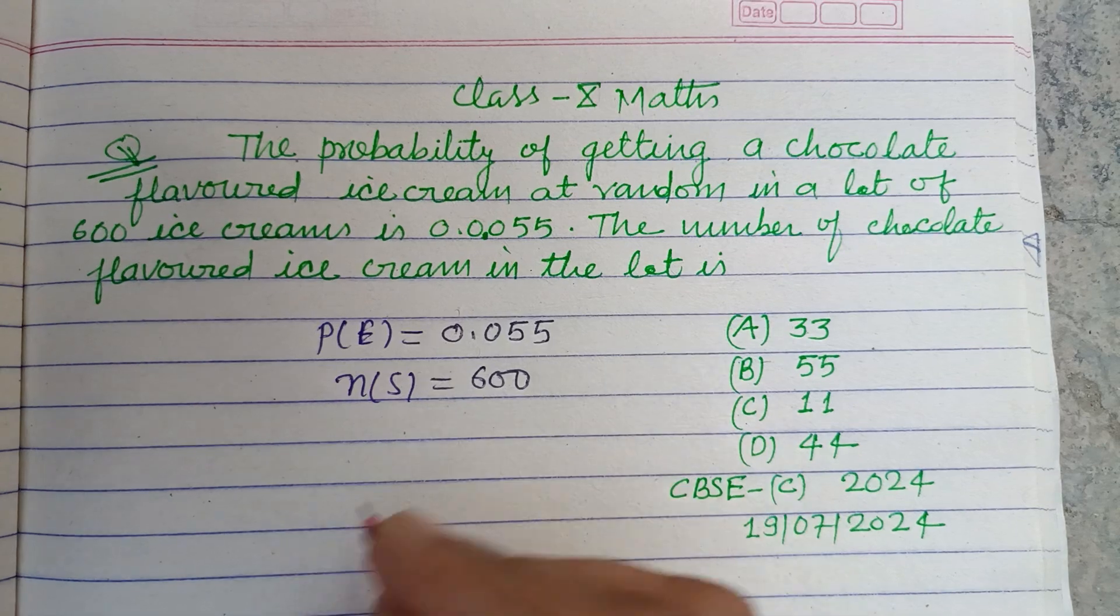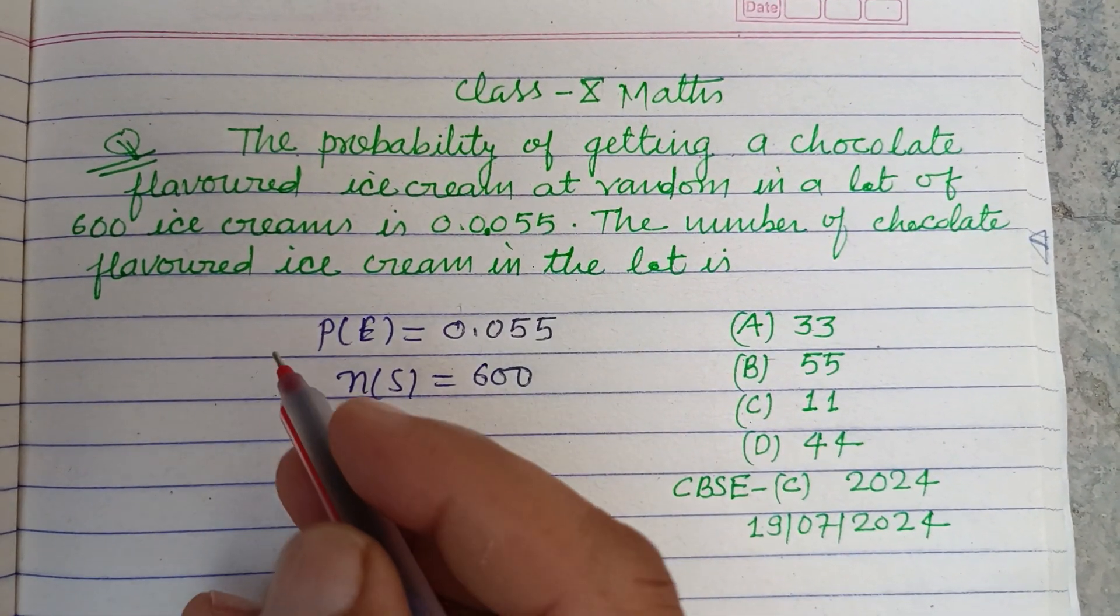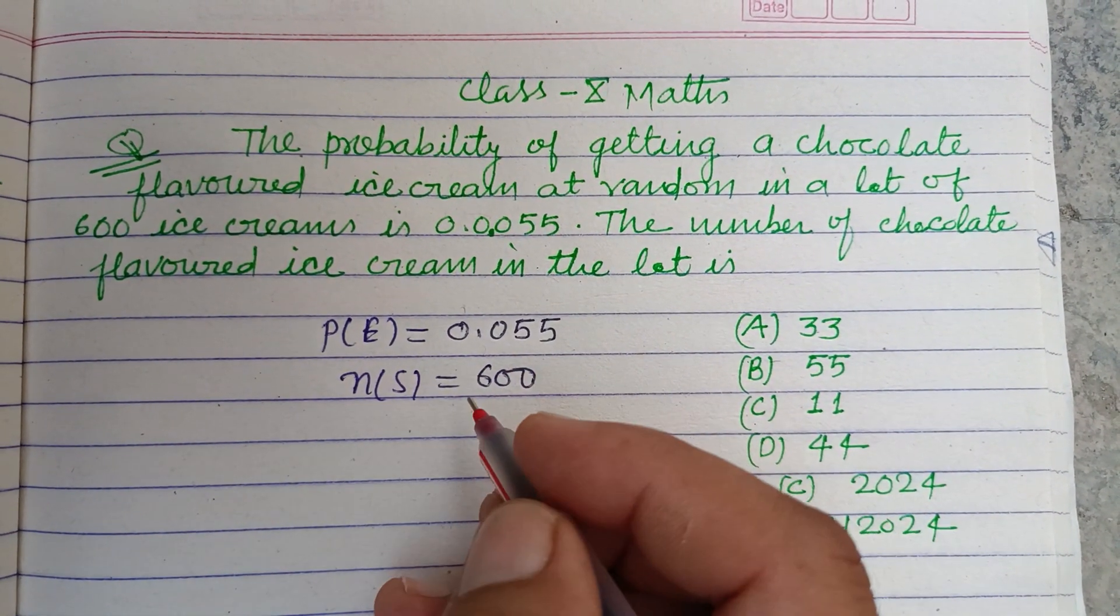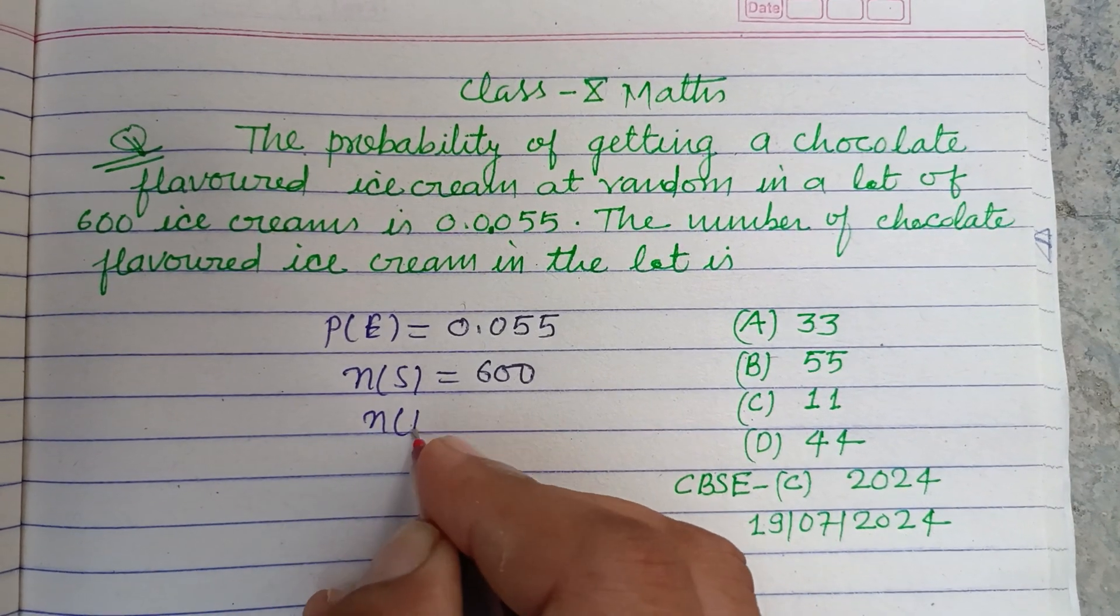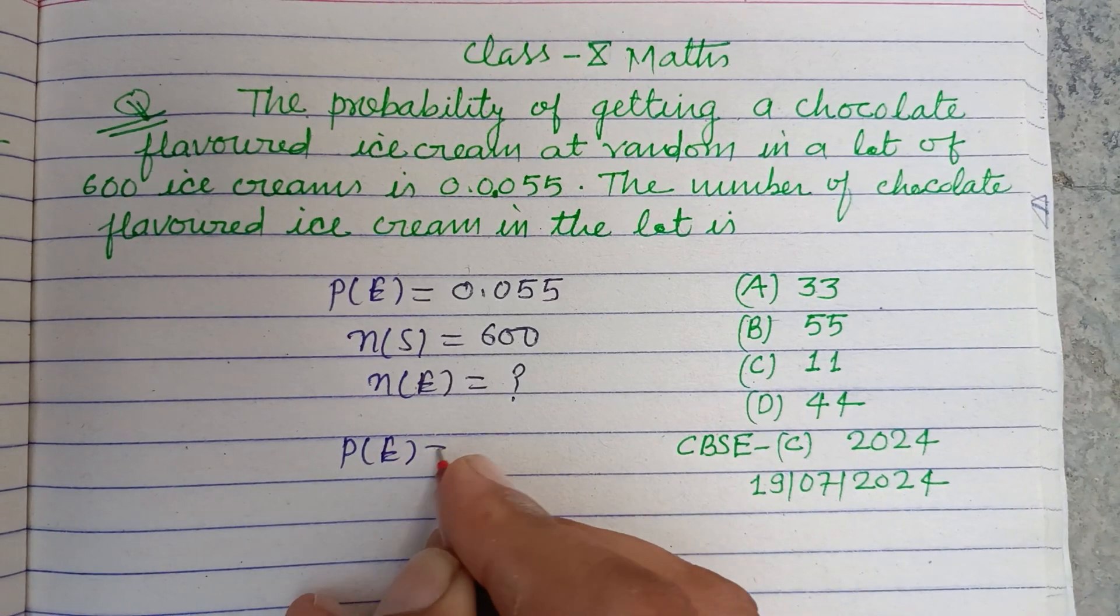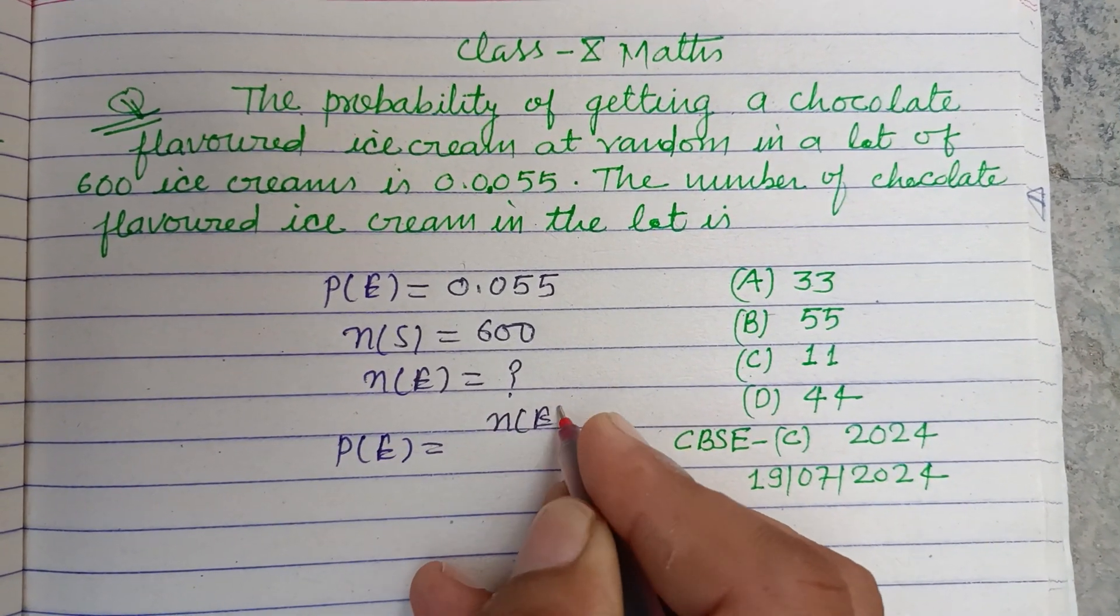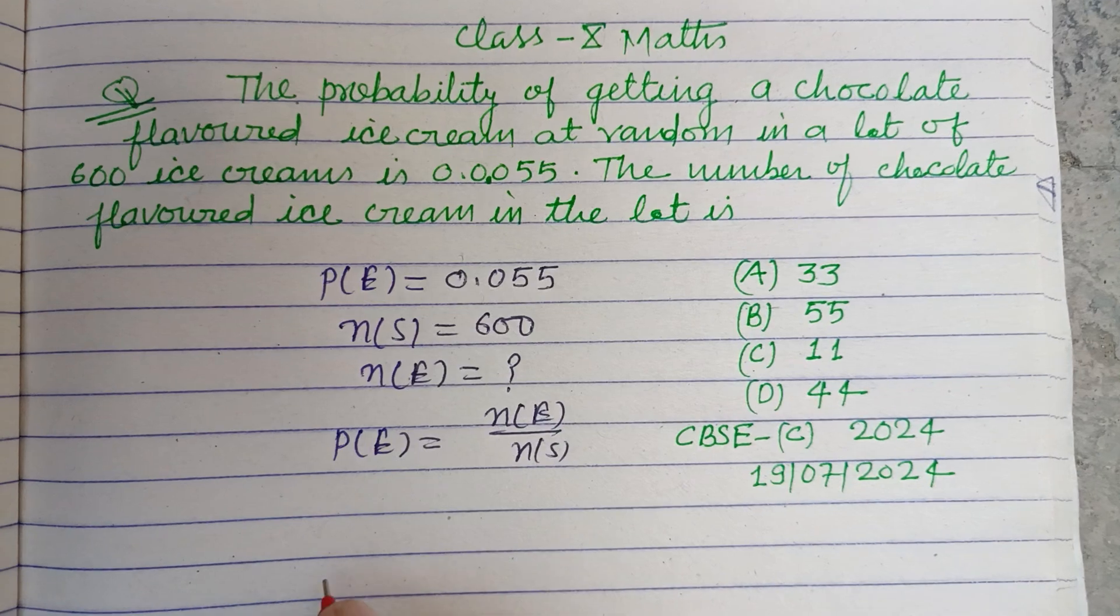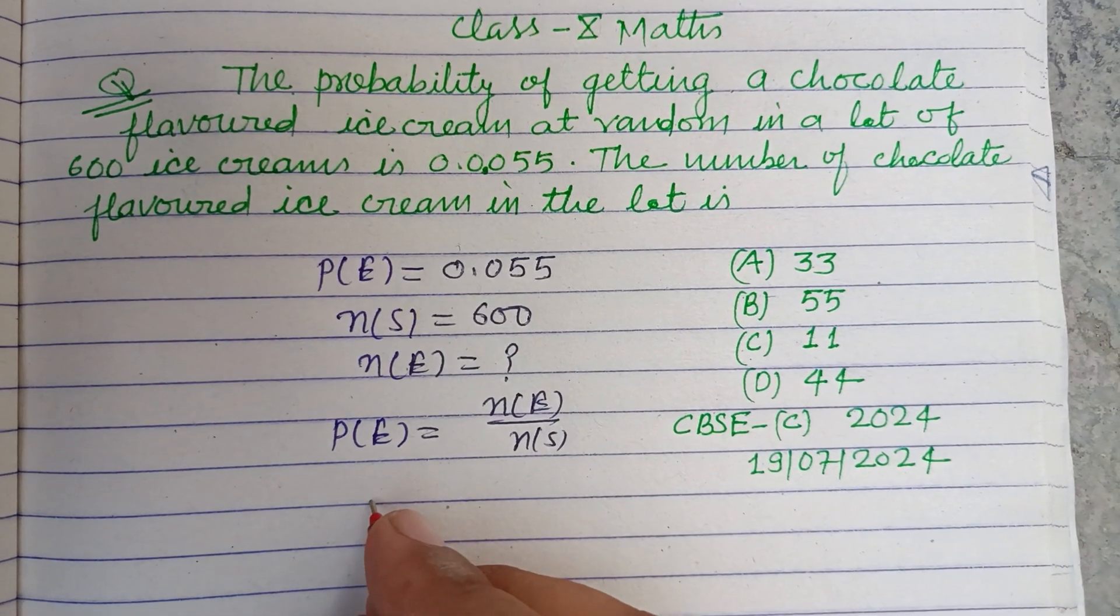The number of chocolate flavored ice cream in the lot is what we need to find, so we are required to find n(E). You know that probability P(E) equals n(E) over n(S), so using this we have 0.055 as the probability, n(E) is required, and n(S) is 600.